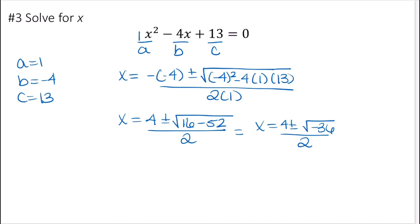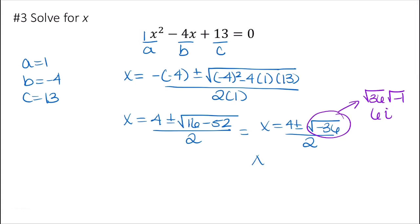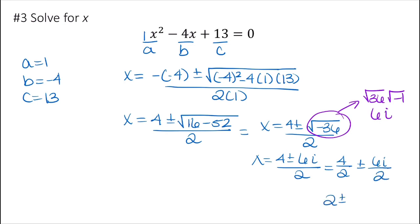The square root of negative 36 is an imaginary number: it's the square root of 36 times the square root of negative 1. Square root of 36 is 6, square root of negative 1 is i, so that's 6i. We have x equals 4 plus or minus 6i over 2, which reduces to 4 over 2 plus or minus 6i over 2, giving x equals 2 plus or minus 3i.